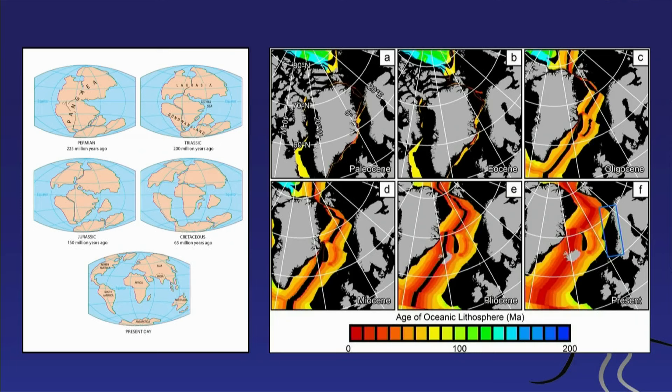Today we still have continental drift — the continents are still moving. The Atlantic is still spreading, but very slowly: about two centimeters a year. To give you a sense, this is about the speed with which your fingernails grow.